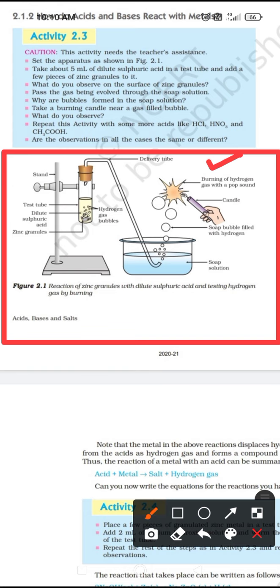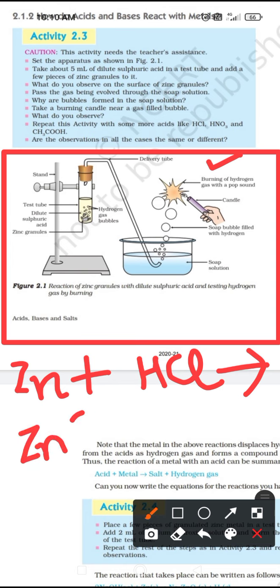Suppose we have taken zinc metal and we change the acid here with dilute hydrochloric acid, HCl. Now, the same reaction will take place. The products that we get is the salt of zinc metal, which will be ZnCl2. The zinc metal is more reactive than hydrogen. So, here the displacement reaction will take place. This zinc atom will displace the hydrogen atom.